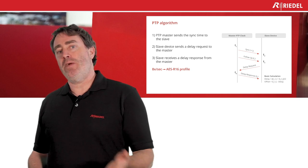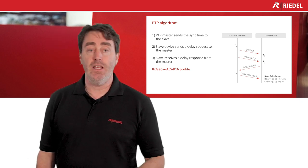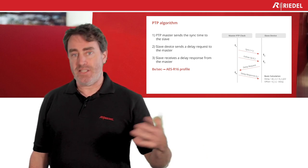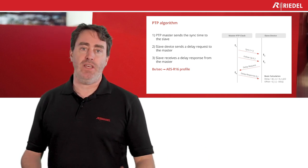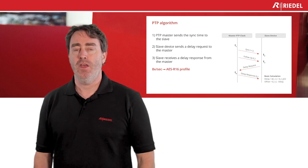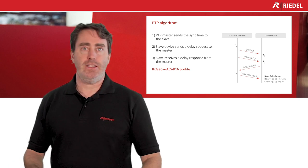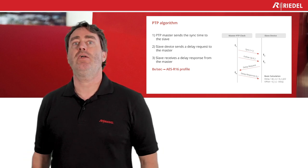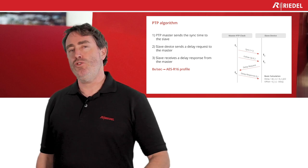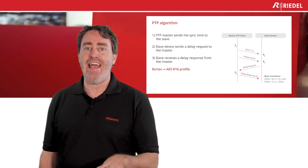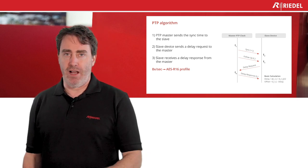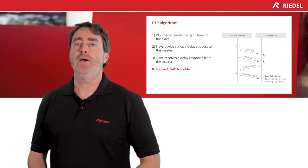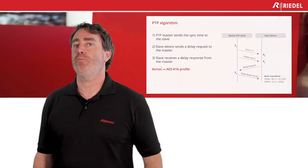The PTP grandmaster will send the sync signal to the device. The device will come back and send a delay request, and then the slave device will receive a delay response from the grandmaster. This is used to calculate the time in the network, and basically the slave device adjusts its time from the PTP received. Usually it's done eight times per second in the AES67 profile, though the profile can change — you can go to 16 times per second — but in ST 2110 it's eight times per second.